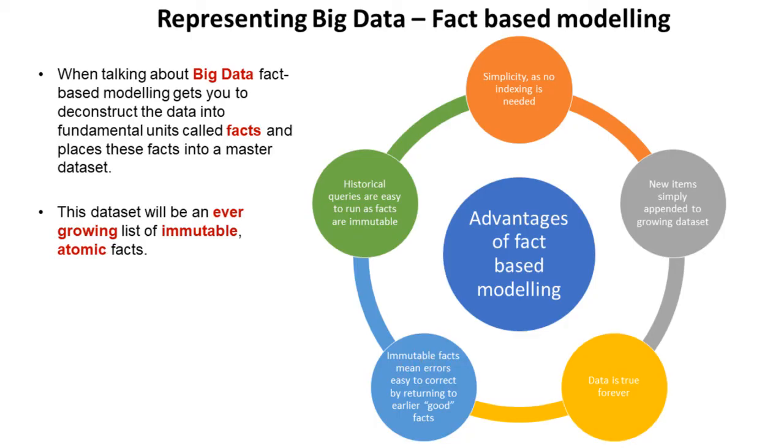Due to the nature of immutable facts it means errors can be easy to correct, because we can return to earlier good facts or simply replace them with new ones with timestamps. It also means historical queries on information in big data are easy to run as the facts are immutable. They don't get changed, deleted or modified.